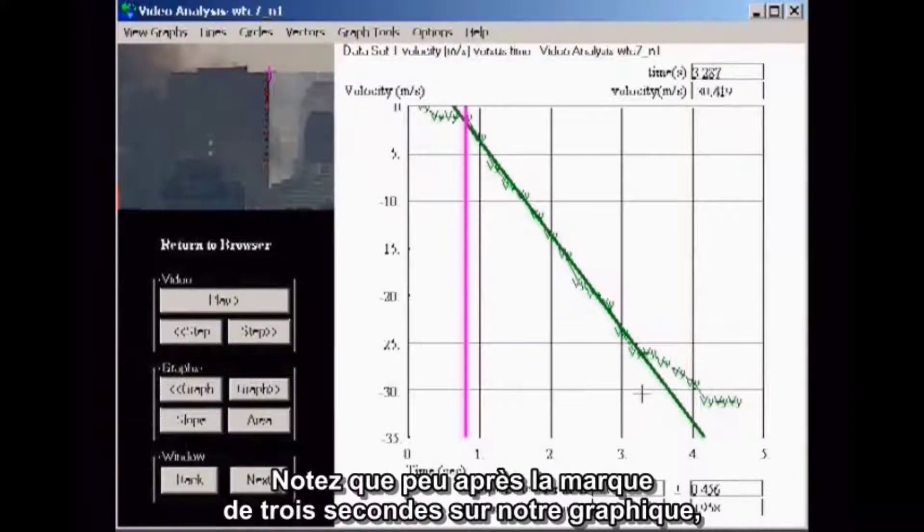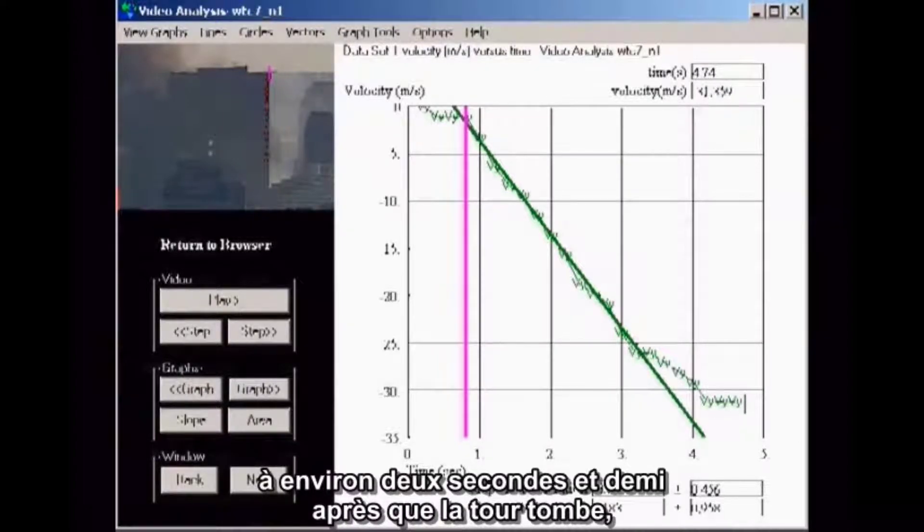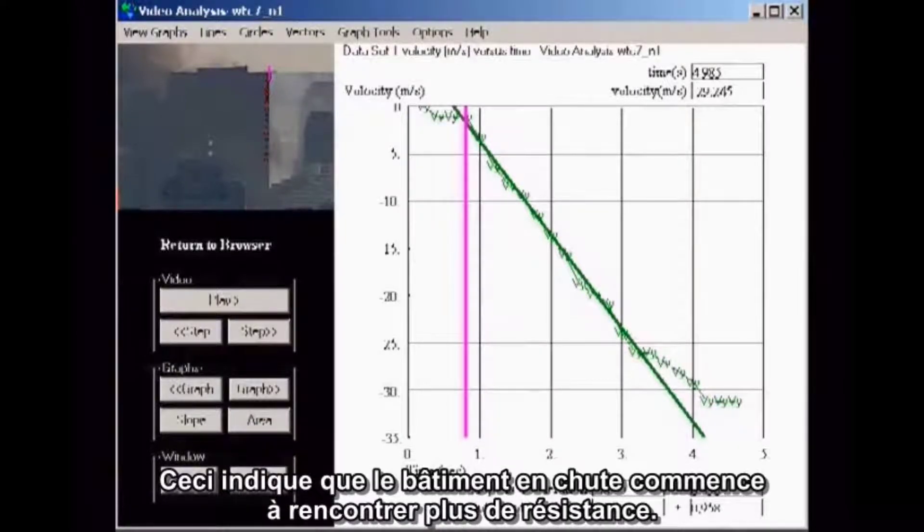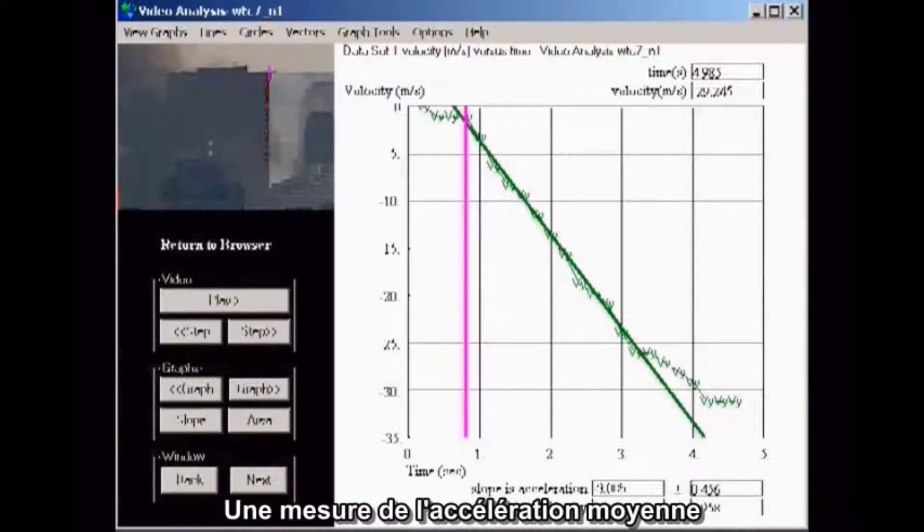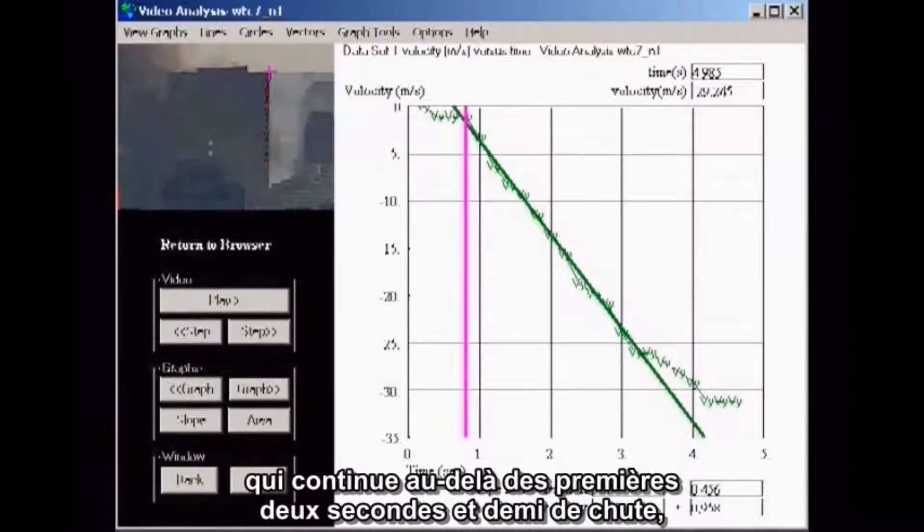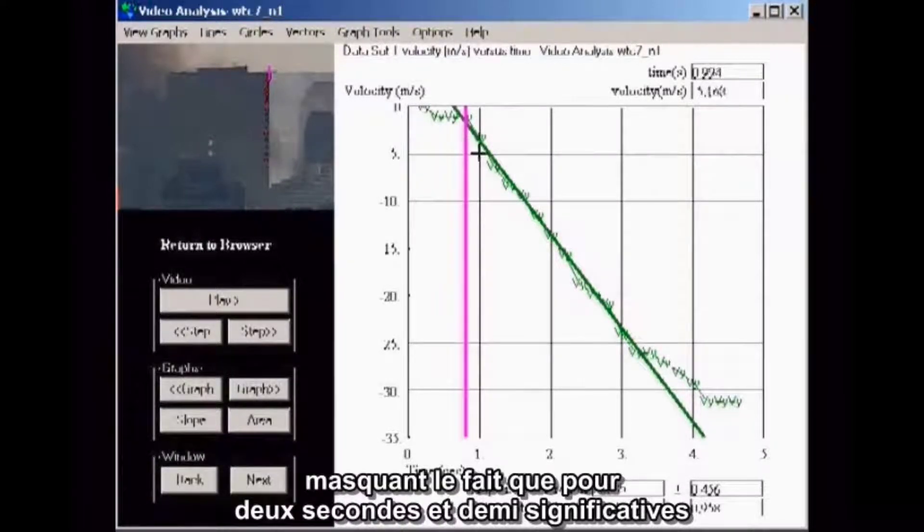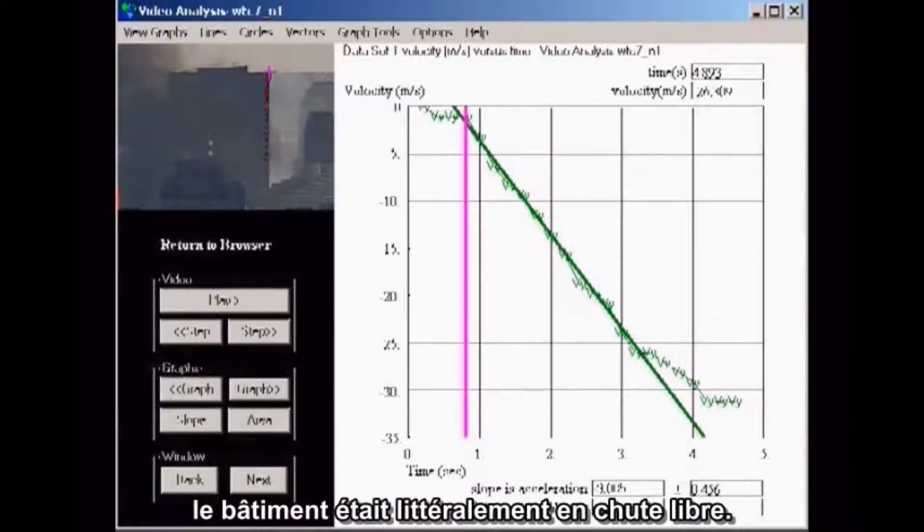Notice that a little after the three-second mark on our graph, about 2.5 seconds after the building drops, the acceleration ceases to be uniform. This indicates that the falling building is starting to encounter more resistance. Any measurement of the average acceleration that continues for more than the first 2.5 seconds of fall will show a lower average acceleration, masking the fact that for a significant 2.5 seconds, the building was in literal freefall.